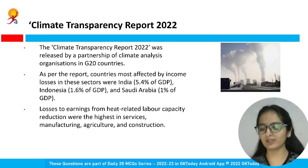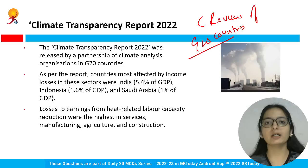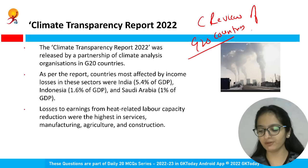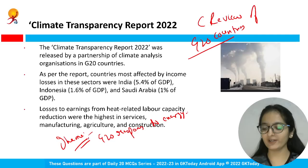The Climate Transparency Report is the world's most comprehensive review of G20 countries' climate action — what steps each country is taking toward net zero emissions and their transition agenda. The theme of this report is 'G20 Response to Energy Crisis: Critical for 1.5 Degree Celsius.'